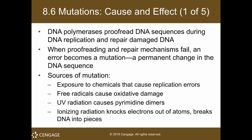What are the possible causes of mutation? Usually it's exposure to chemicals that can cause replication errors — we call those chemicals carcinogens, because mutations can eventually cause tumors and later cancer. Other causes of mutation are free radicals and UV radiation. UV radiation is ionizing radiation and it produces pyrimidine dimers. Other types of ionizing radiation can knock electrons out of atoms or break the DNA into pieces.